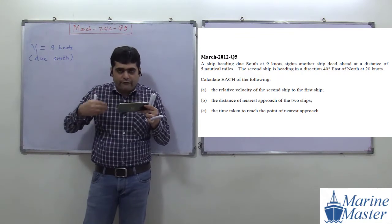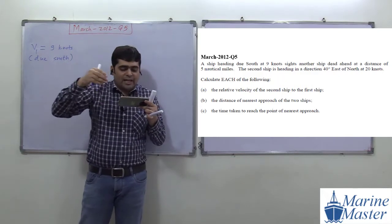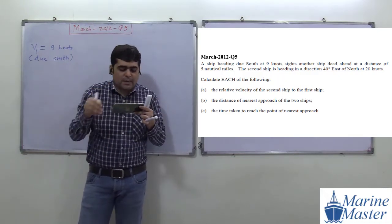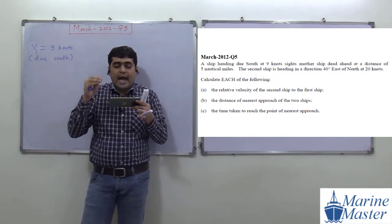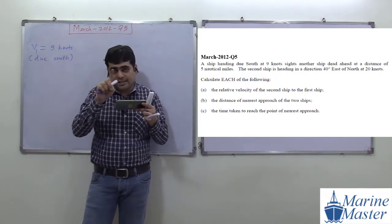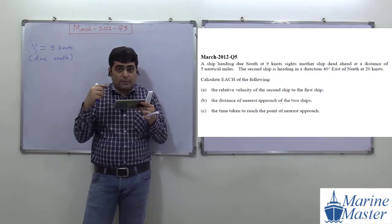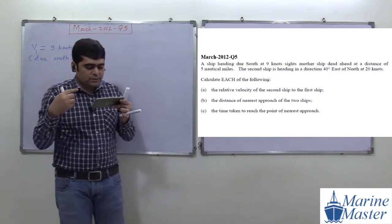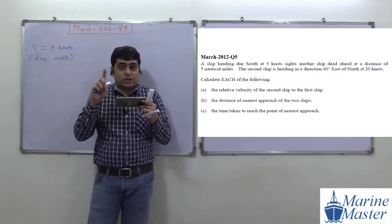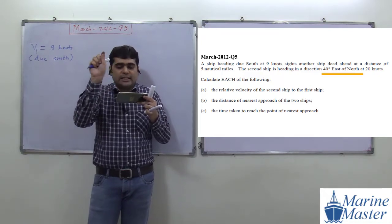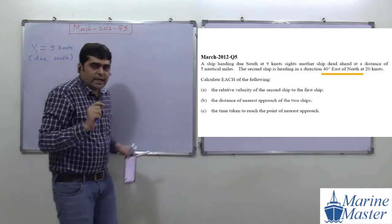The first ship sights another ship dead ahead. I will explain what 'dead ahead' means in part B. The second ship is at a distance of five nautical miles, and its second ship V2 is heading in a direction of forty degrees east of north.